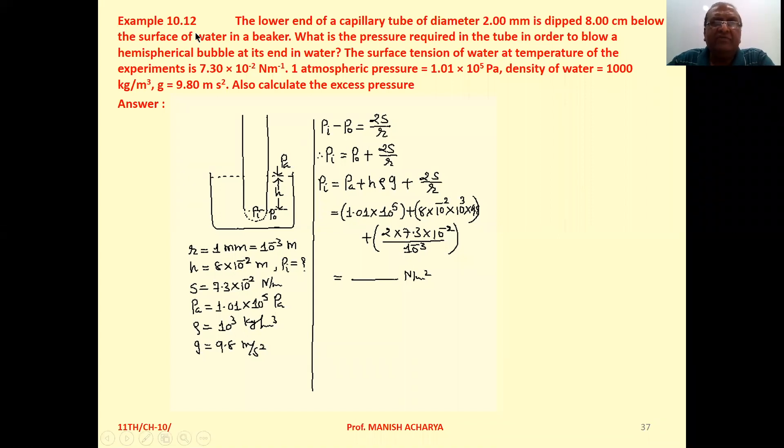Example 10.12: The lower end of a capillary tube of diameter 2 mm is dipped 8 cm below the surface of water in a beaker.